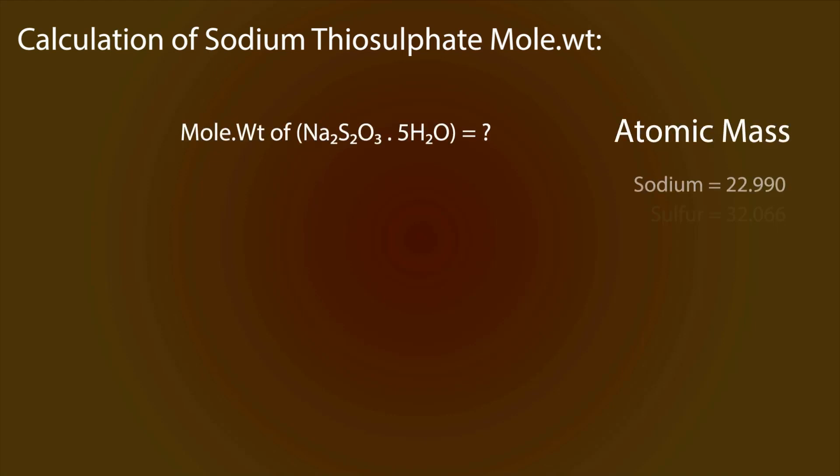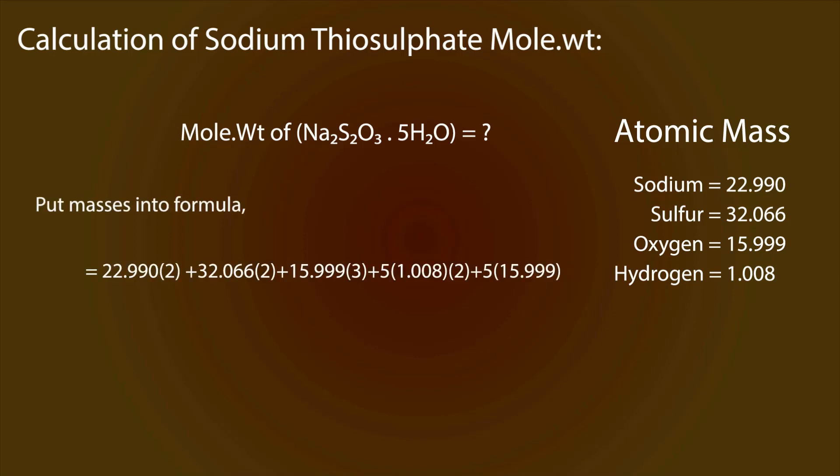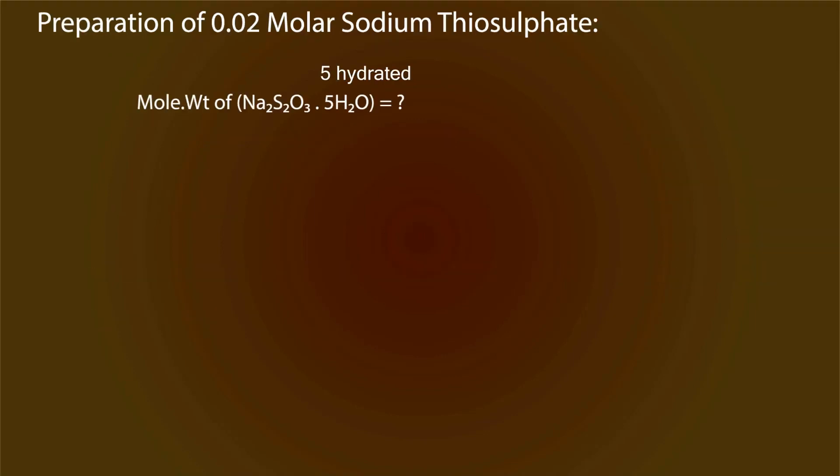The atomic masses of sodium is 22.990, sulfur is 32.066, oxygen is 15.999, and hydrogen is 1.008. Put them into the formula and we can get the molecular weight of sodium thiosulfate as 248.2 grams per mole.